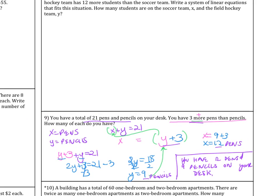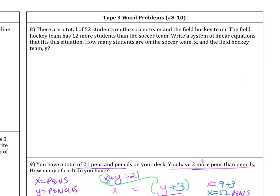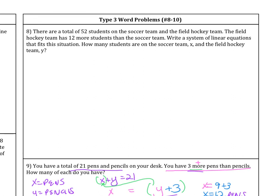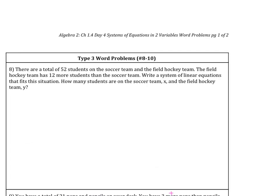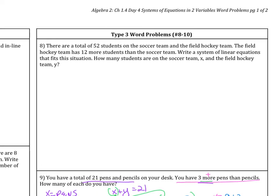Let's take a look at this example here. There are a total of 52 students on the soccer team and the field hockey team. The field hockey team has 12 more students than the soccer team. Write a system of linear equations that fits the situation. How many students are on the soccer team, we can call that x, and how many are on the field hockey team, y. So they already defined our variables for us. So x is soccer and y is hockey.